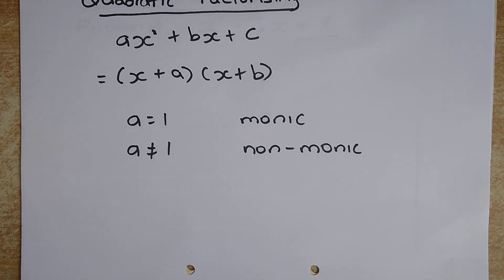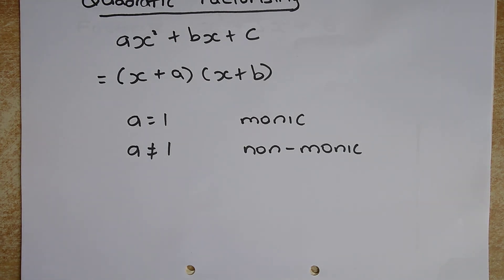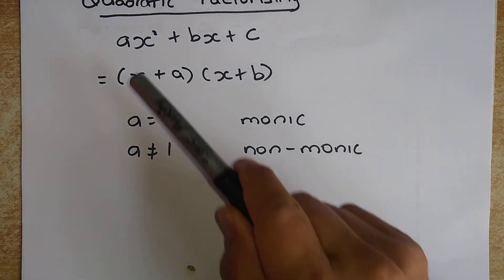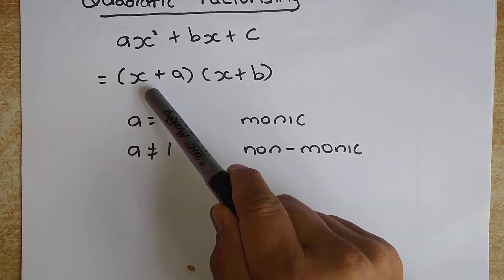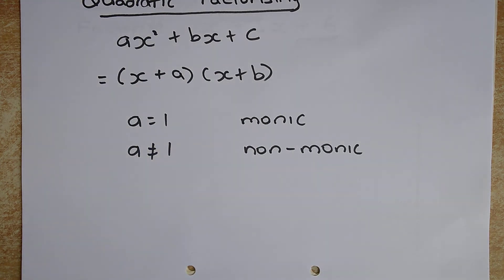Good morning everyone. Today we are going to learn how to factorize a quadratic. A quadratic has the form ax squared plus bx plus c. When you factorize, you are going to put them into brackets — because the power is squared, you have two brackets.